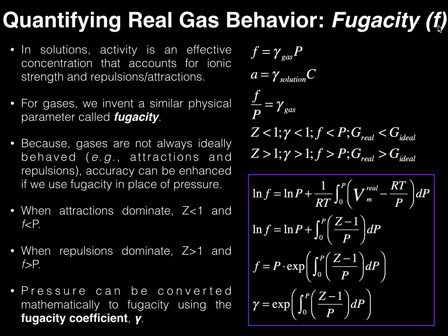Fugacity is going to be given by the lowercase f. To understand fugacity, let's think back to a little bit of solution chemistry that you may have seen either earlier in physical chemistry or even in analytical. Sometimes instead of using a concentration — that's what we use in solution — we would rather use something called activity, which in the simplest terms is defined as an effective concentration.